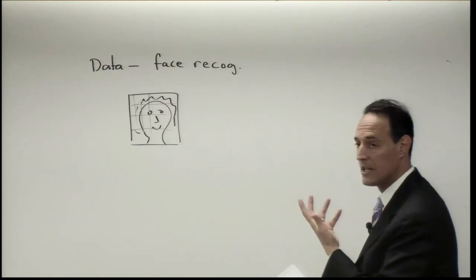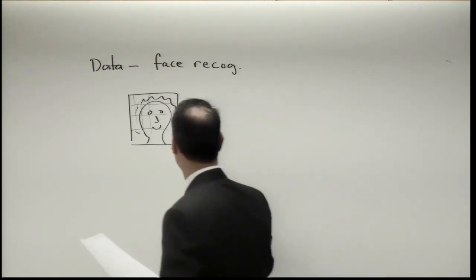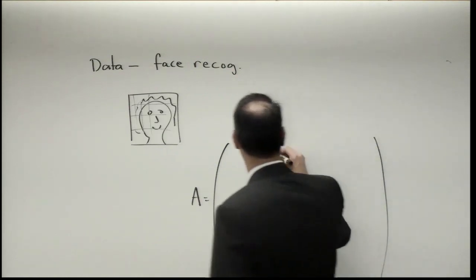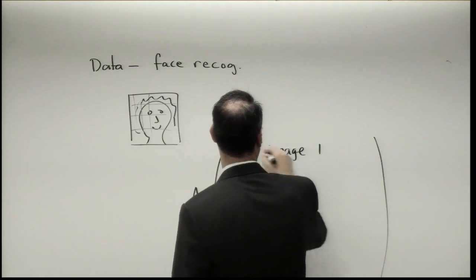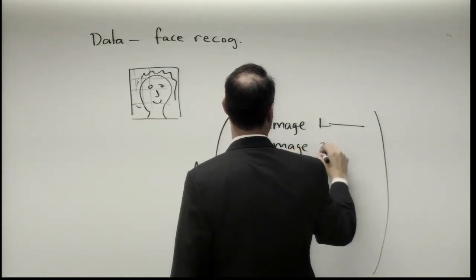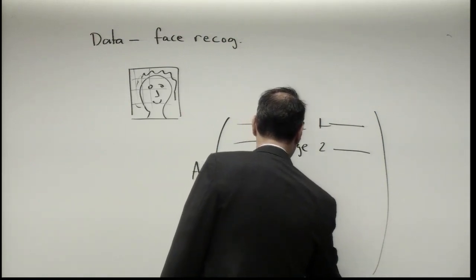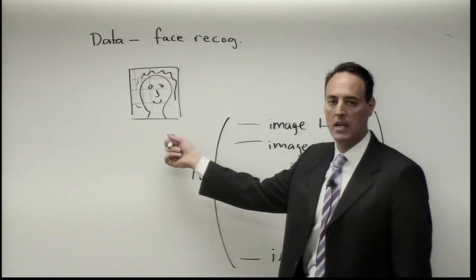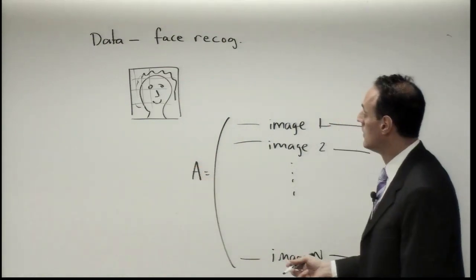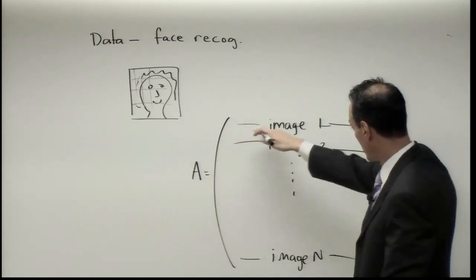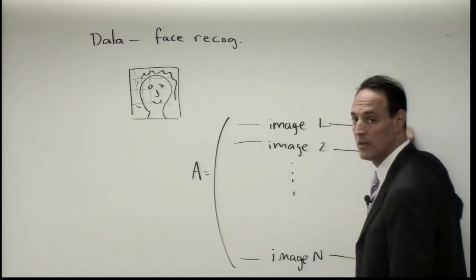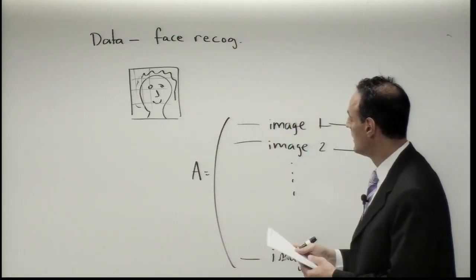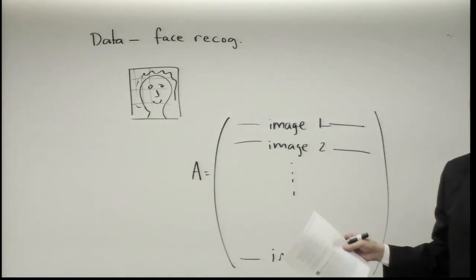This is just one image — one piece of data. What I'm looking to construct is my data matrix A. What I want in my data matrix is a set of images: image one in the first row, image two in the second row, all the way to image N, just stacking them up. But wait — my image is already a matrix. So the first thing you're going to do is reshape that matrix into a vector. You lay down the rows one after another. This is called matrix-to-vector conversion.